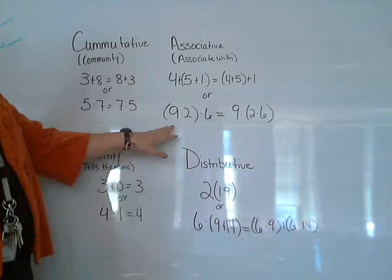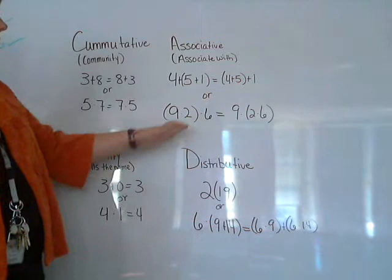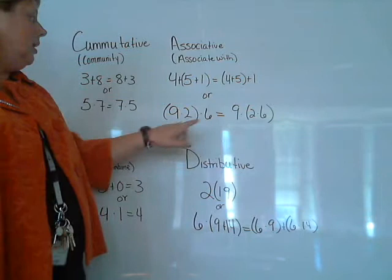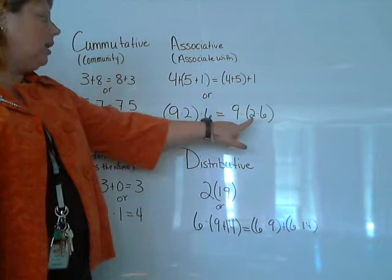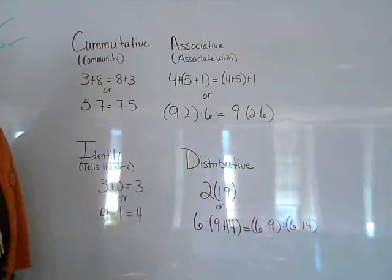Here is the same with multiplication. 9 times 2 in parentheses times 6 is the same as 9 times 2 times 6 in parentheses. In this case, the 2 is associating with the 9 in the parentheses, and here the 2 is associating with the 6 in the parentheses. They all equal the same thing.